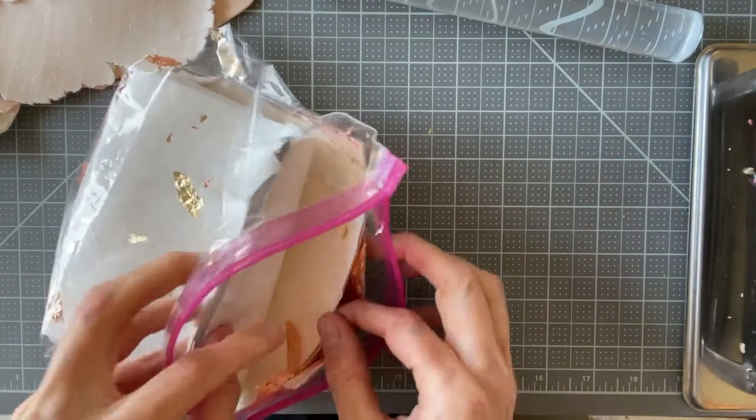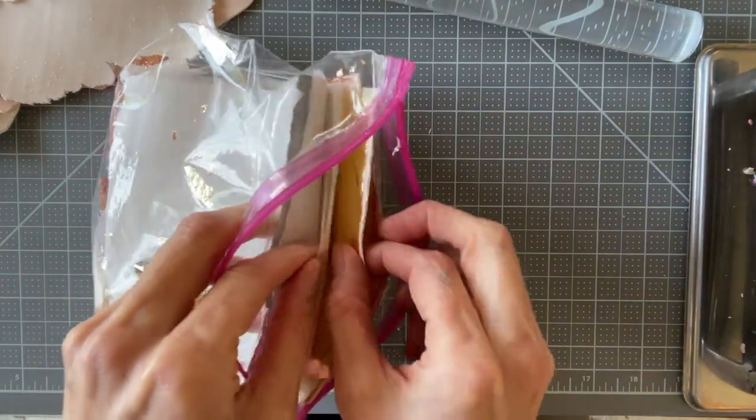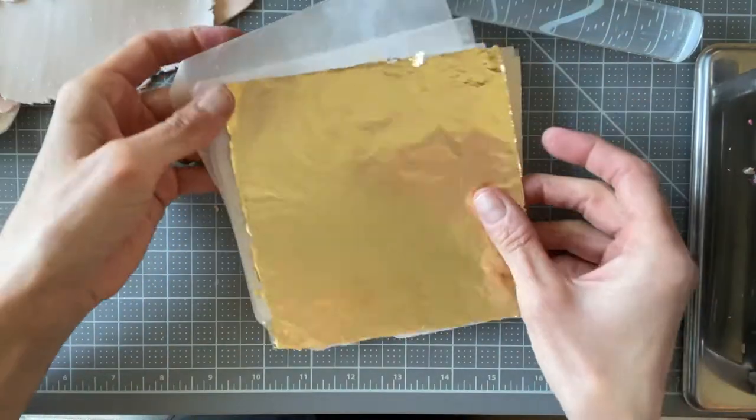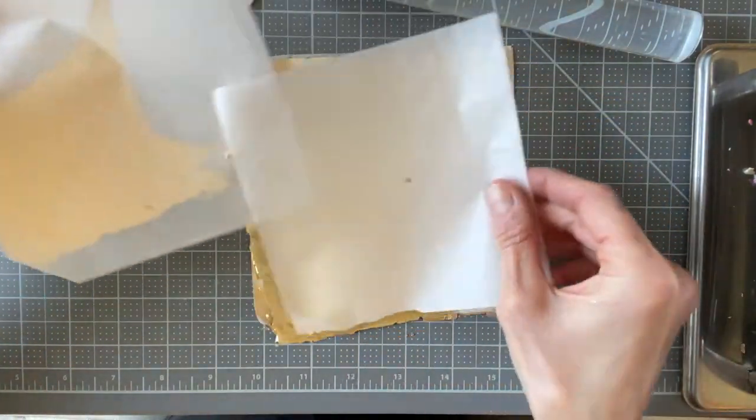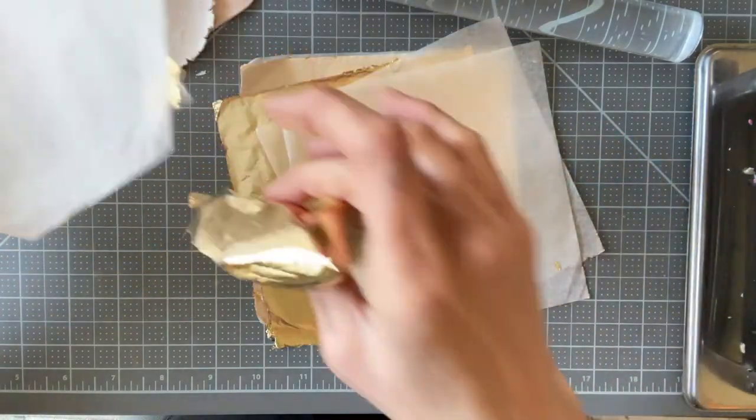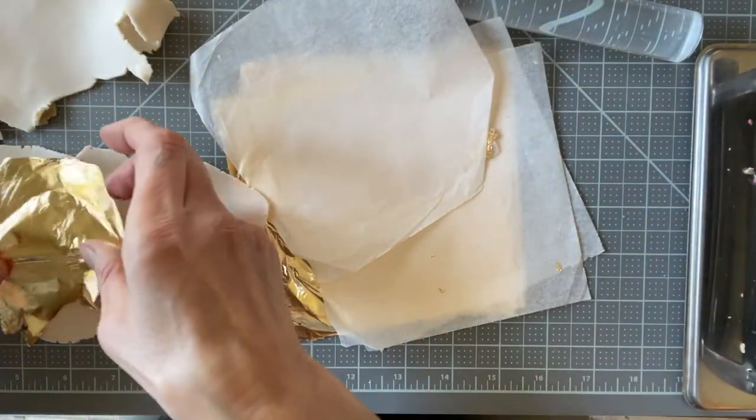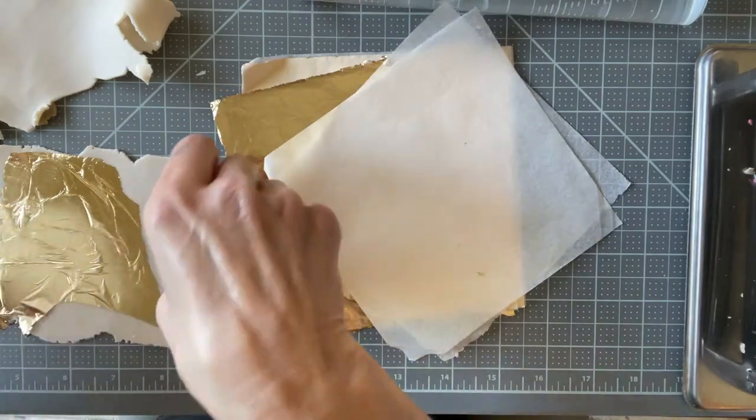I'm using these gold leaf sheets to mix with the translucent clay. I keep them in this plastic bag so they don't crumble or blow away if a fan is on or if the screen door is open. These are synthetic gold and are fairly inexpensive and easily available. They're super thin so make sure your hands are dry or it will stick to you.